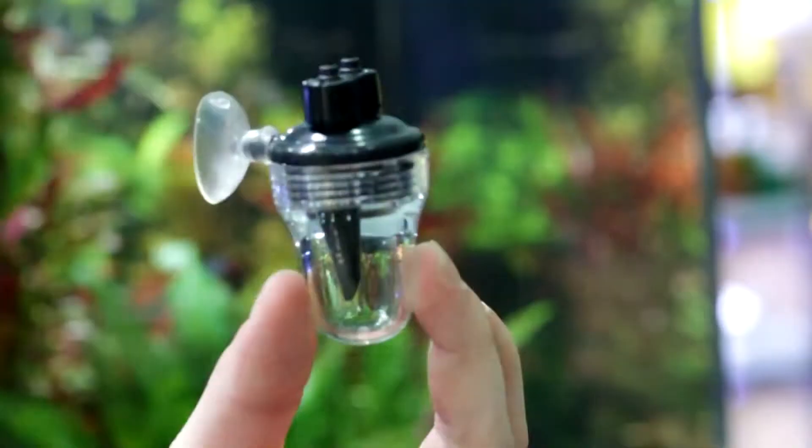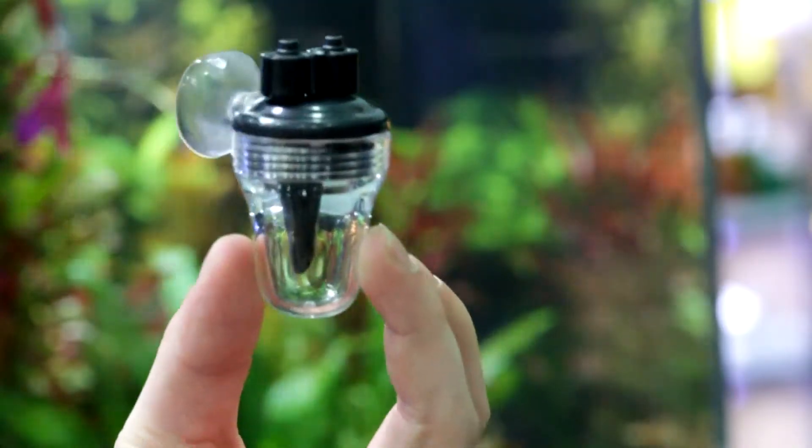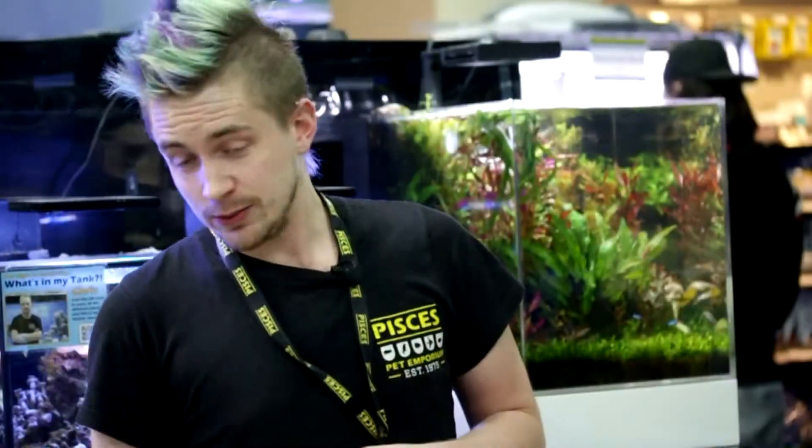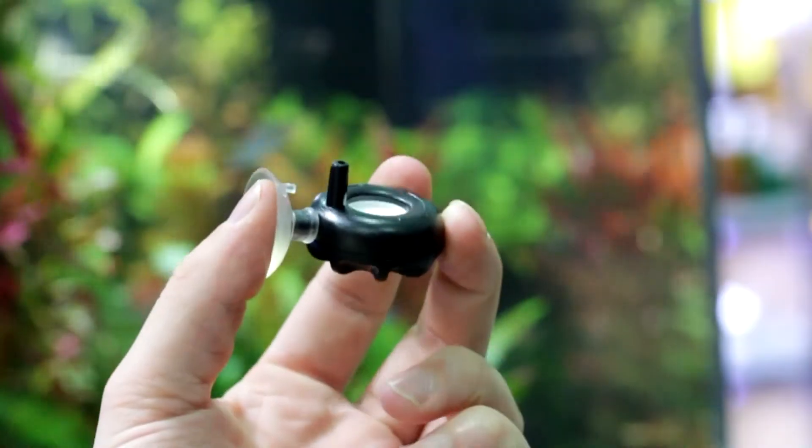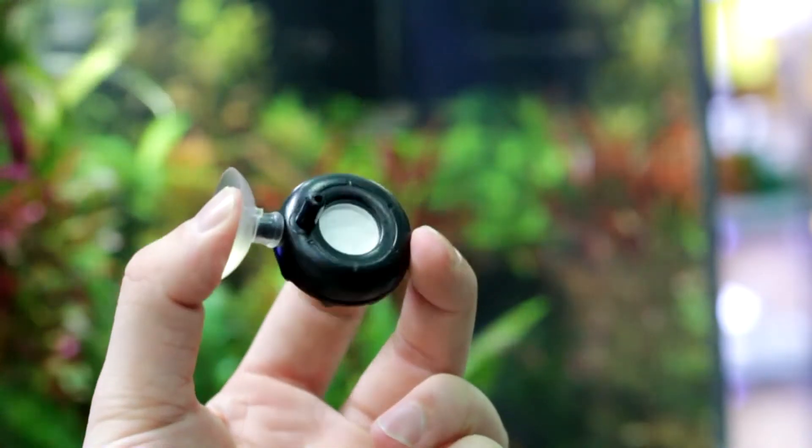The next part is the two-in-one bubble counter and check valve. This is how you monitor how much CO2 is being released into your planted aquarium. Finally, we have the CO2 diffuser, which creates very fine micro bubbles so that the CO2 is dissolved at optimal amounts into the water column.